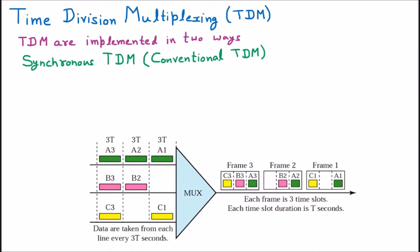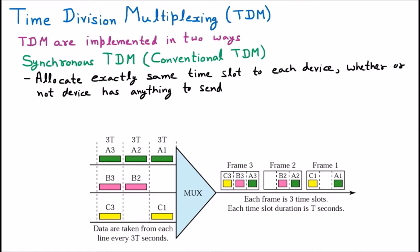Now we are discussing the first type which is synchronous TDM. In synchronous TDM, we are going to allocate exactly the same slot to every device whether they are having any data to send or not. We are going to give everybody a time slot. If one person doesn't want to communicate, we are wasting those 5 minutes because that slot is fixed for that person. This is called synchronous TDM — where everybody is given a chance even if they are not having any data to send. This is the conventional technique.